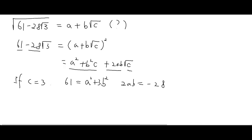Since 2AB is negative, AB must equal negative 14, which means one of them must be a negative number. But you don't need to worry about that yet. You just try any factor pair of 14 — that's 2 and 7, or 7 and 2 — two possibilities.